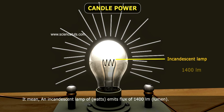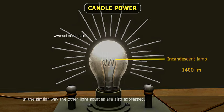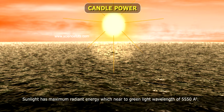Sunlight has maximum radiant energy near the green light wavelength of 5550 angstroms.